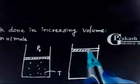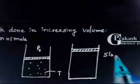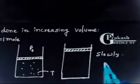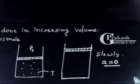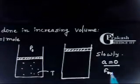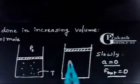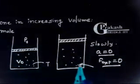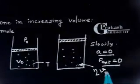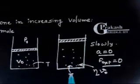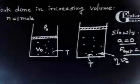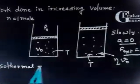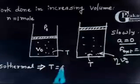We are raising this piston slowly. Slowly raising means the acceleration is zero, so the net external force on the piston is zero — force equals mass times acceleration equals zero. The initial volume is V0, the final volume becomes eta times V0, and temperature remains the same because the process is isothermal.